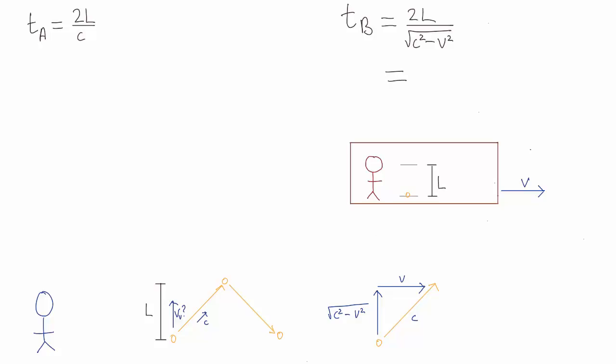tA is just 2L over c, so if we pull a term out like that, we get this. And we can simplify this like this.